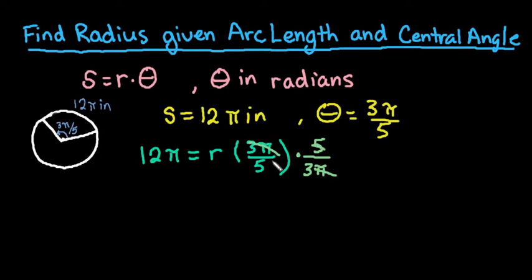So this would cancel out everything on this side so we would be left with R. And on the other side if we take 5 over 3 pi. Because remember whatever you multiply one side by you have to multiply the other side in order to keep it balanced.